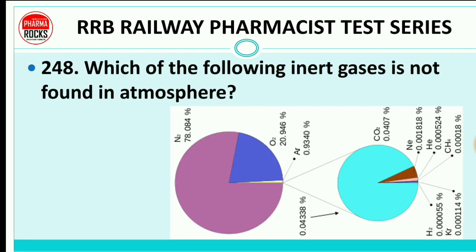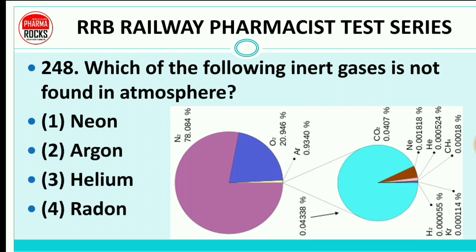Question 248: Which of the following inert gases is not found in the atmosphere? Neon, argon, helium, or radon? The right answer is radon. Atmospheric gas composition: nitrogen ~78%, oxygen 21%, argon 0.934%, and the remaining 0.043% includes carbon dioxide, neon, helium, methane, hydrogen, and krypton. Radon is not present in atmospheric gases.